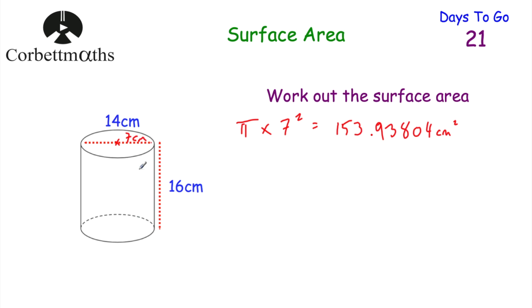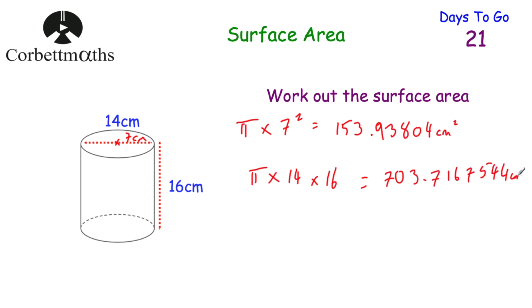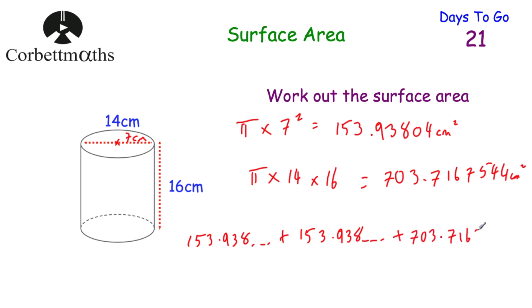For the curved face: circumference × height of the cylinder = π × 14 × 16, because if we lay it out flat the length is the circumference and the width is the height. π × 14 × 16 = 224π or 703.7168 centimetres squared. For the total surface area: 153.9380 + 153.9380 + 703.7168 = 322π or approximately 1011.5928 centimetres squared. Well done if you got that.